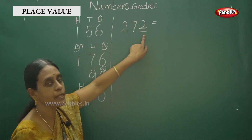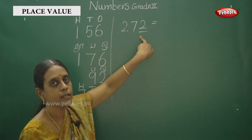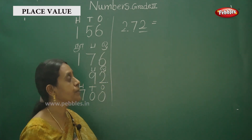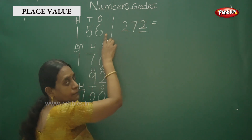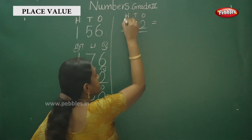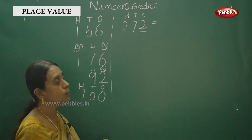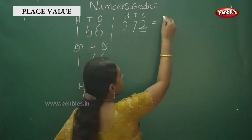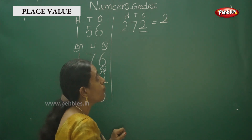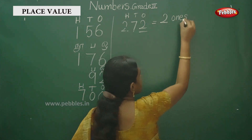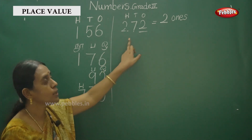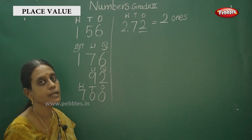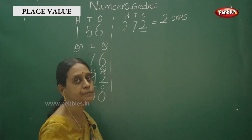The underlined digit is 2. First, you have to write the same way: ones, tens, and hundreds. Find the place value — how to write? Write ones, tens, and hundreds. For 272, two ones, tens, and hundreds. Find the place value — two ones.